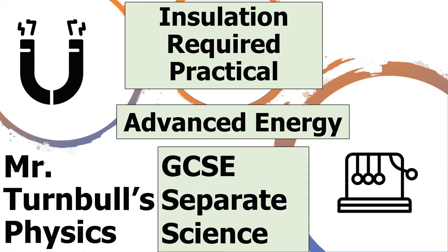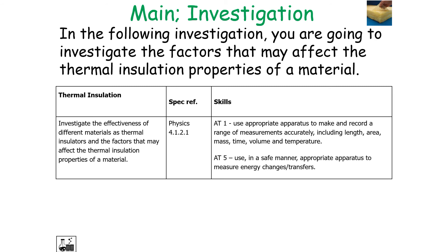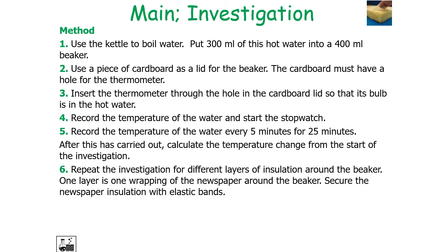In the final part of this revision session, we'll look at the insulation required practical. In this investigation, we're going to work out the effect of material thickness on the thermal insulating properties of a material. You'll need a 250 ml beaker, a thermometer, a kettle, a piece of cardboard, scissors, a stopwatch, newspaper, and rubber bands. You'll use the kettle to boil water, pour 300 ml of hot water into a 400 ml beaker, and use a piece of cardboard as a lid with a hole for the thermometer. Insert the thermometer through the hole, record the temperature of the water, start the stopwatch, and record the temperature every 5 minutes for 25 minutes. Then repeat the investigation for different layers of newspaper insulation secured with elastic bands.